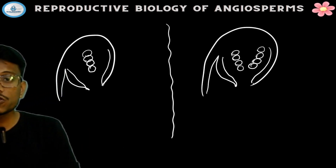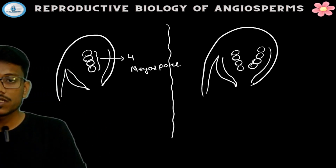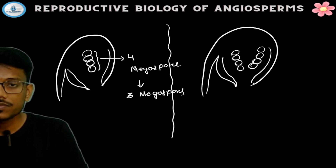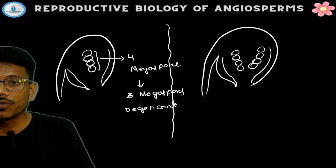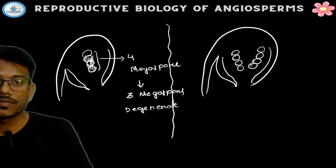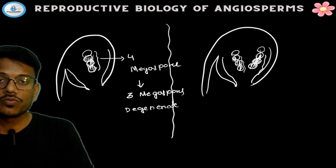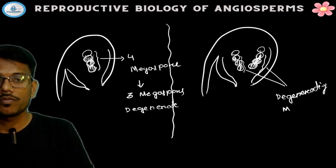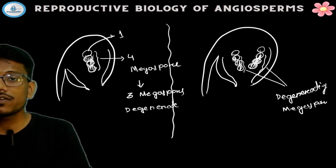Out of these four megaspores, three megaspores degenerate and one becomes functional. The same thing happens with the other set — three degenerate. So these are the degenerating megaspores, and one functional megaspore remains from each set.